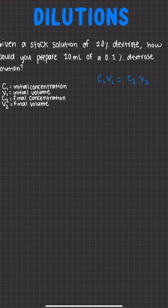So the question told us that our initial concentration would be 2%, our initial volume is our unknown, it's what we're solving for, and we also know that our final concentration is going to be 0.1%, and that our final volume is going to be 10 milliliters.